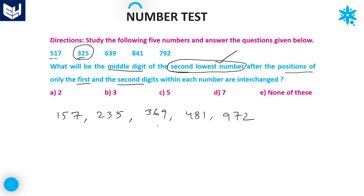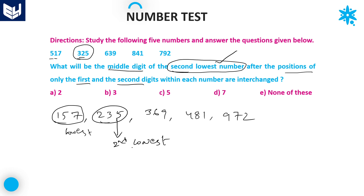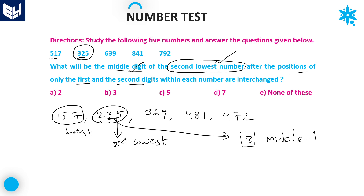Now find the second lowest number. The lowest number is 157. The second lowest number is 235. The middle digit of 235 is 3. Option B is the right answer.